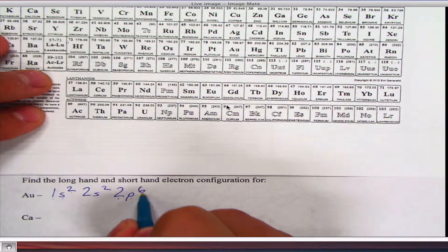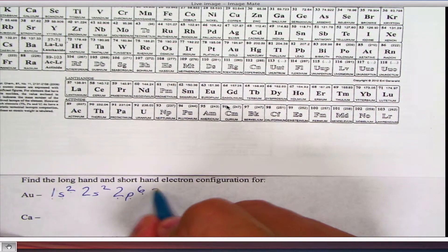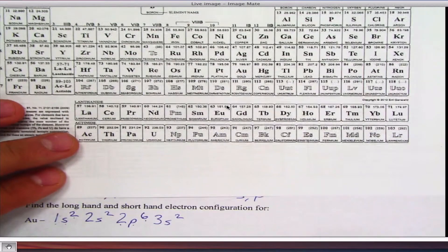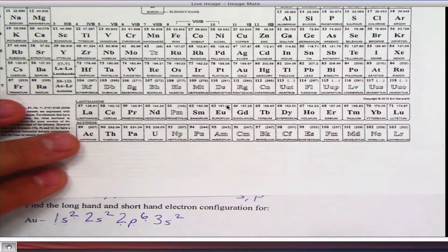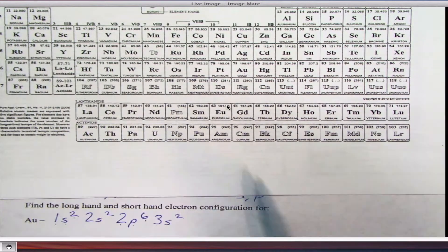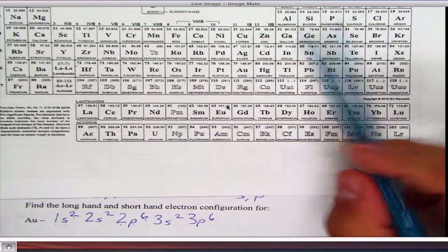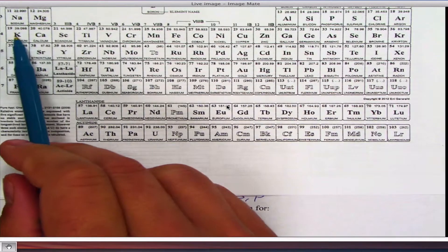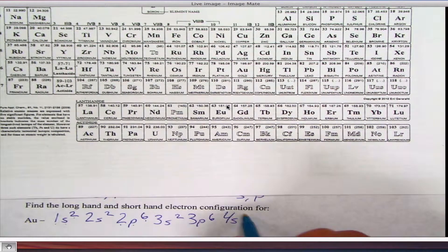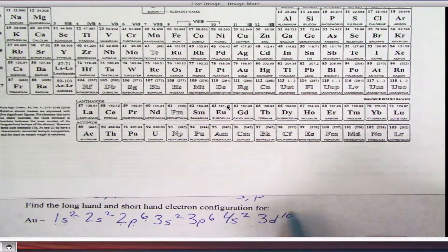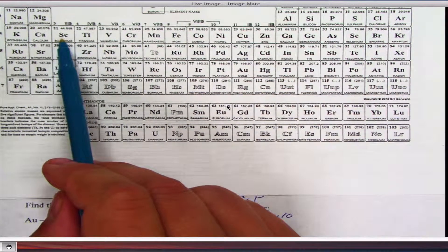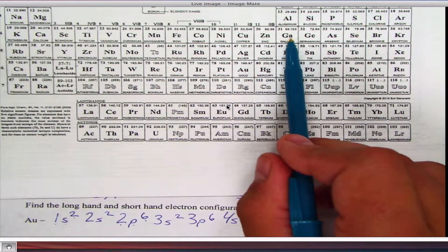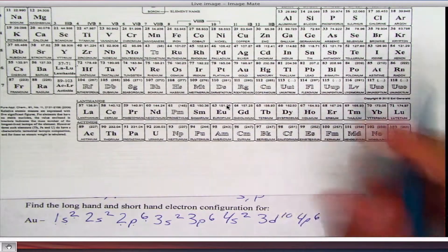Third row, 3S2. That'll take me to magnesium. Then I go 3P6. That'll take me through aluminum to argon. 4S2. That'll take me to calcium. 3D10. That takes me through this middle area, which is called the transition metals, all the way to zinc. 4P6. That'll take me to krypton.